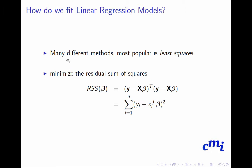As we discussed, there are many different methods. The most popular method is least squares. You minimize the residual sum of squares. First, compute the residual sum of squares of beta, which is y minus x beta transpose times y minus x beta, which you can write as sum of yi minus xi transpose beta square.